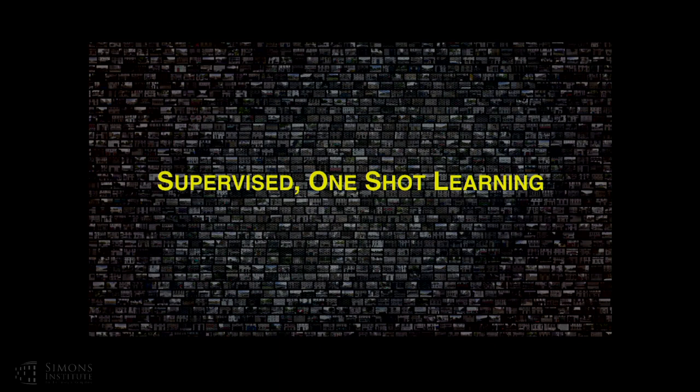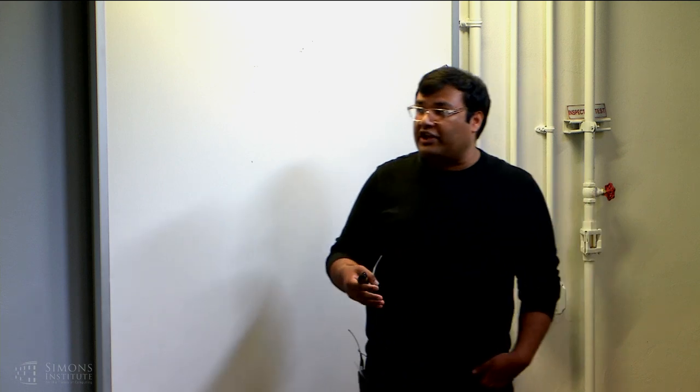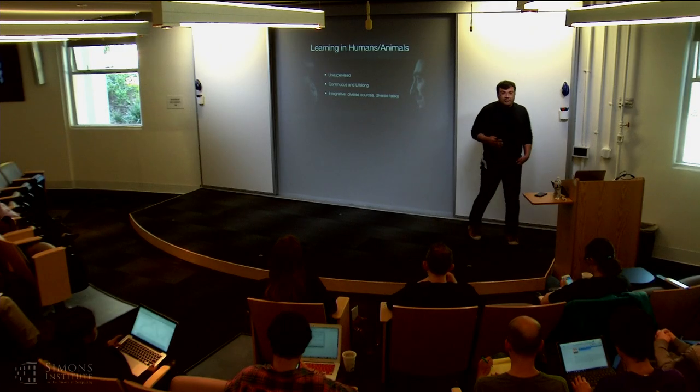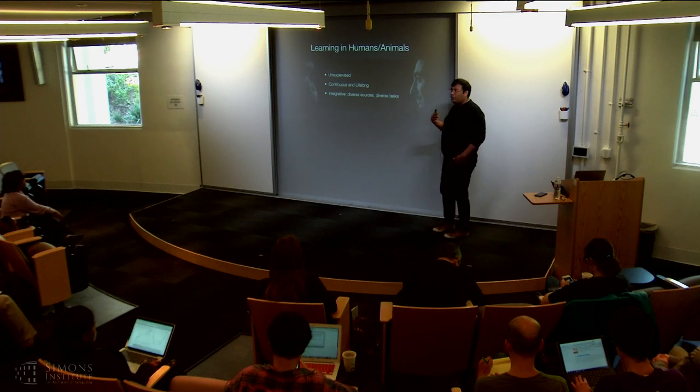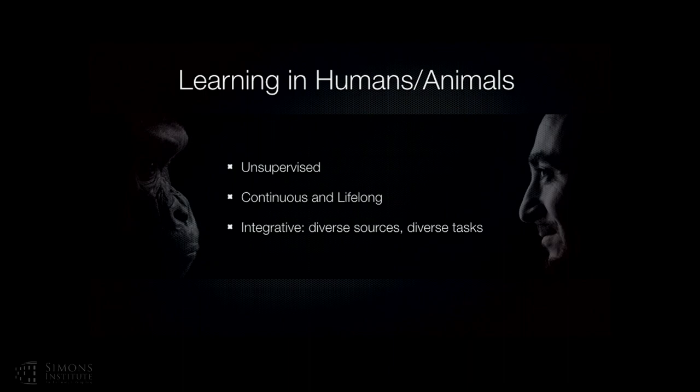Now compare this learning to how learning happens in humans. In the case of humans, first, learning is unsupervised in nature — we are not using tens of different categories of mushrooms or cats to learn about our world. Most of the learning happens without any labels. Second, we are not doing one-shot learning; we are doing more continuous and lifelong learning. And finally, most learning in humans is integrative — you use diverse sources for diverse tasks. You're not doing one model for vision, one model for audio, a third model for NLP, and so on.